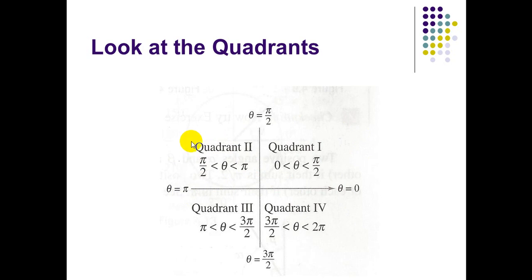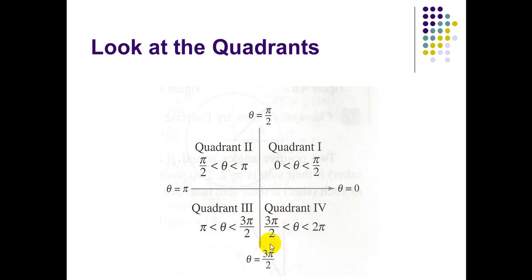In the third quadrant, theta is between π and 3π/2. π is equivalent to 180° and 3π/2 is equivalent to 270°. In the fourth quadrant, theta is between 3π/2 and 2π. 3π/2 is equivalent to 270° and 2π is equivalent to 360°.